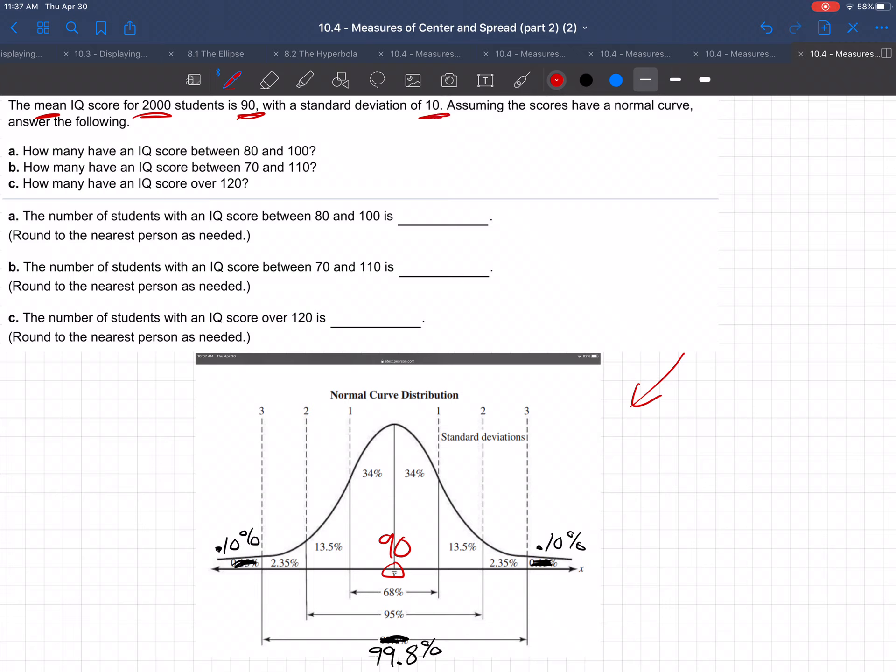And then the standard deviation is 10. The standard deviations are these lines, these jumps. So this goes up by 10. So this would be 100. This goes up by 10 again. This would be 110. And up by 10 again, this would be 120.